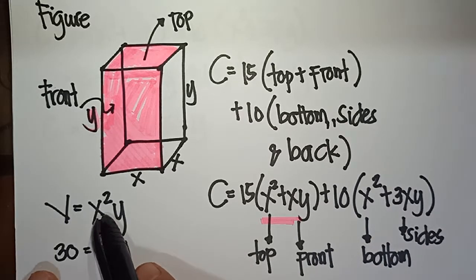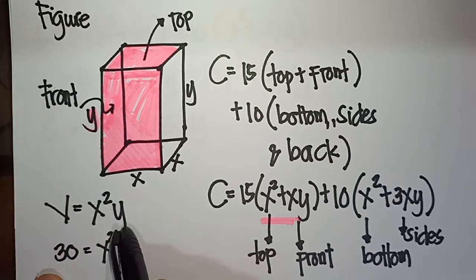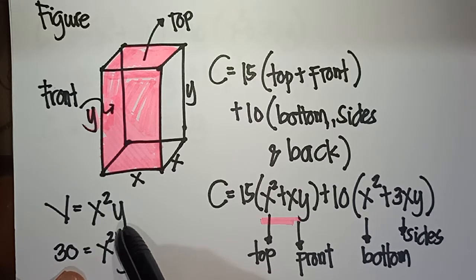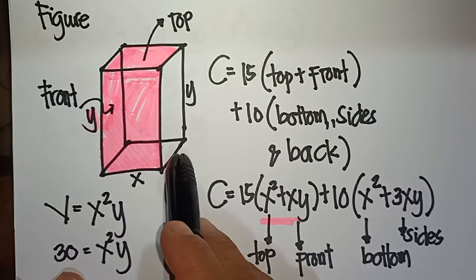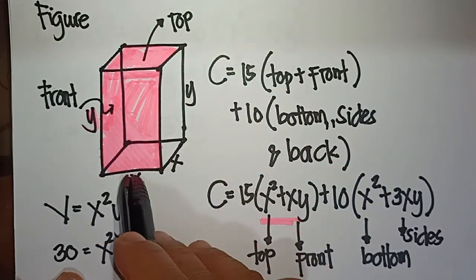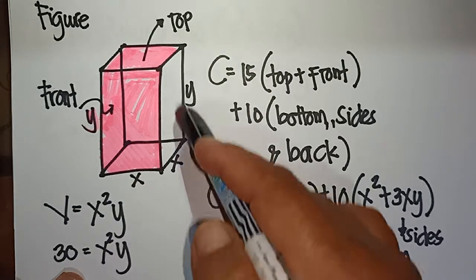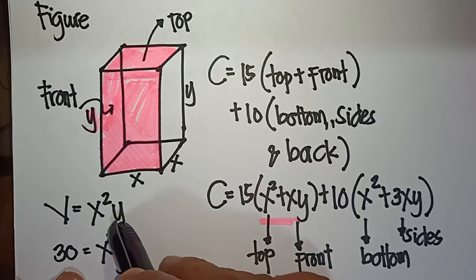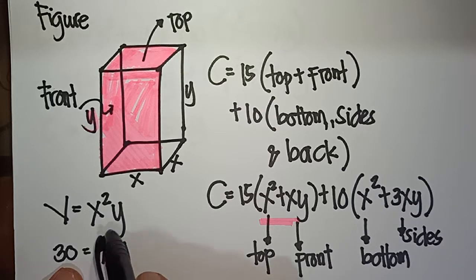The rectangular box has a square base with a capacity of 30 cubic meters. Since that is cubic meters, it refers to volume. The formula for the volume of the box is: volume equals x squared times y. So 30 equals x squared times y.